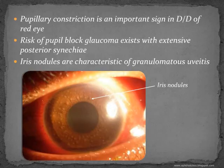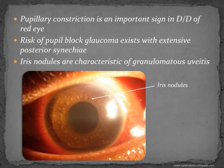A few more points on anterior uveitis. Pupillary constriction is an important sign in the differential diagnosis of red eye. In conjunctivitis, it is almost always normal, and in acute congestive glaucoma attack, it is fixed and dilated. Whereas in iridocyclitis, the pupil is small with sluggish reaction.